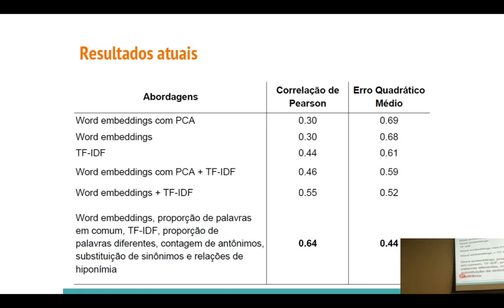Aqui a parte interessante: os resultados do nosso trabalho. Ele foi avaliado em correlação de Pearson — uma medida bem comum na área de similaridade e regressão linear — e também no erro quadrático médio. A correlação de Pearson mede o quão relacionados estão o resultado predito e o esperado: se a gente disse que um valor foi 5 e o valor esperado foi 5, temos uma correlação forte positiva. Os word embeddings com PCA tiveram resultado muito próximo dos word embeddings com a soma — a gente acredita que isso se deva pela perda de informações ao juntar tudo num vetor, descartando cerca de 599 vetores por sentença.